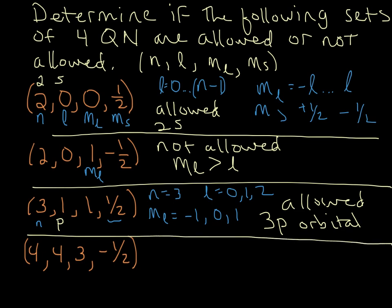So let's look at our last one. N equals four, perfectly fine. L equals four. So start thinking about that. So that is equal to n, and that's not allowed, because remember, l can be no larger than n minus one. So this set is not allowed. So basically, once you find something that isn't allowed, it doesn't even matter about those two.